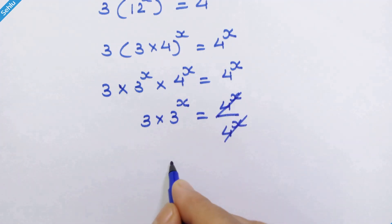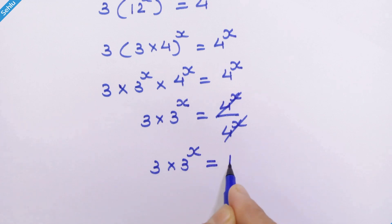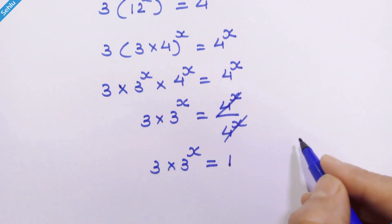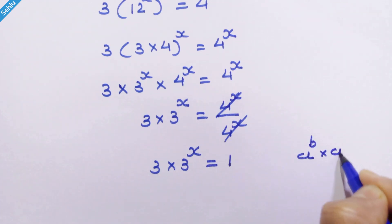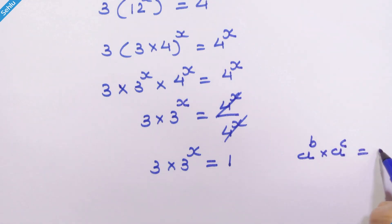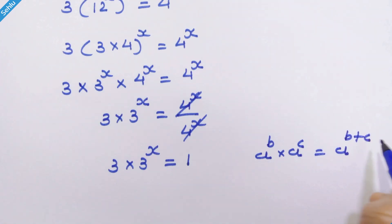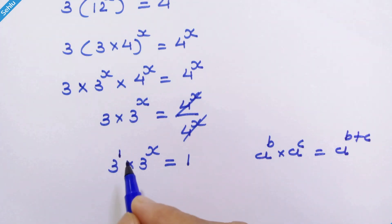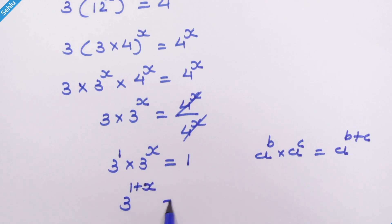These two will be cancelled. So we have 3 into 3 raised to x is equal to 1. Now if we have a raised to b into a raised to c, then it can be written as a raised to b plus c, and here 1 is the exponent of 3. So we can write 3 raised to 1 plus x is equal to 1.